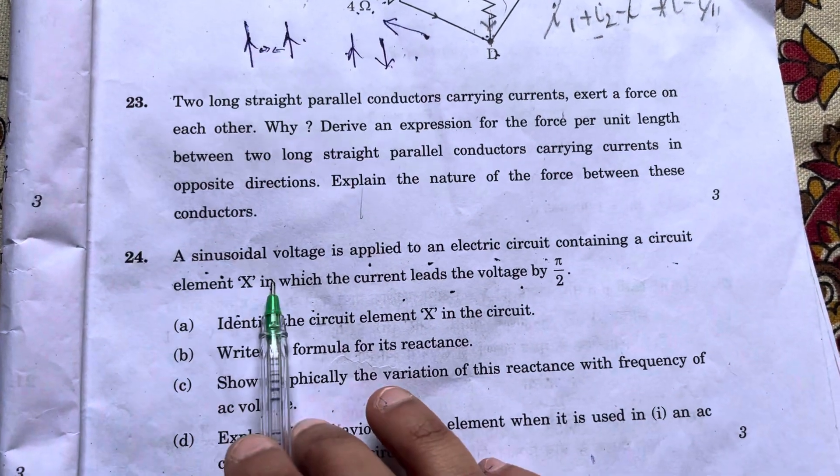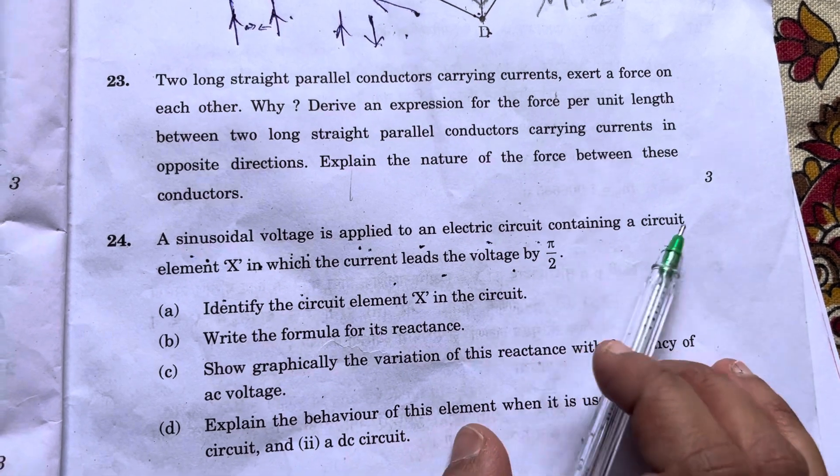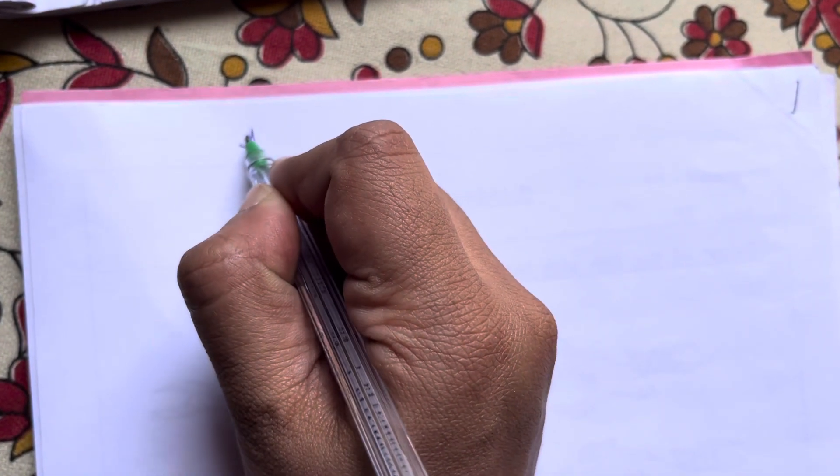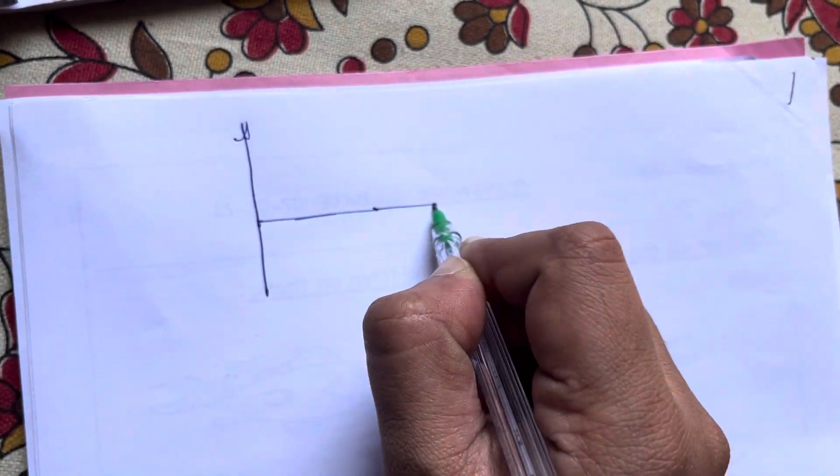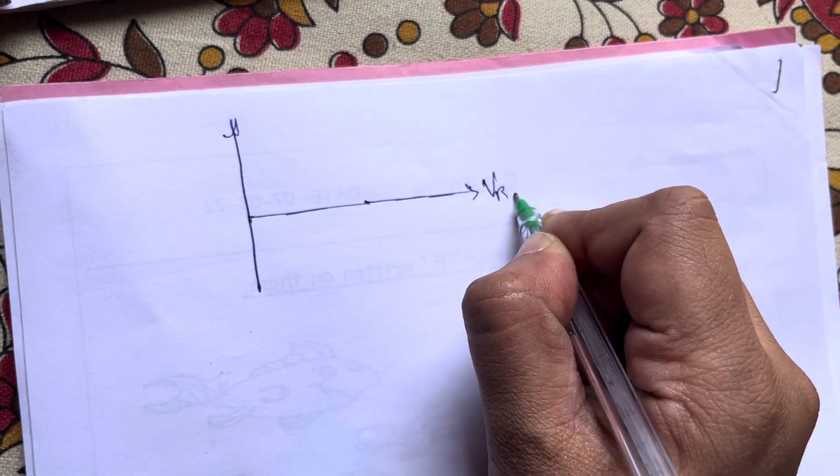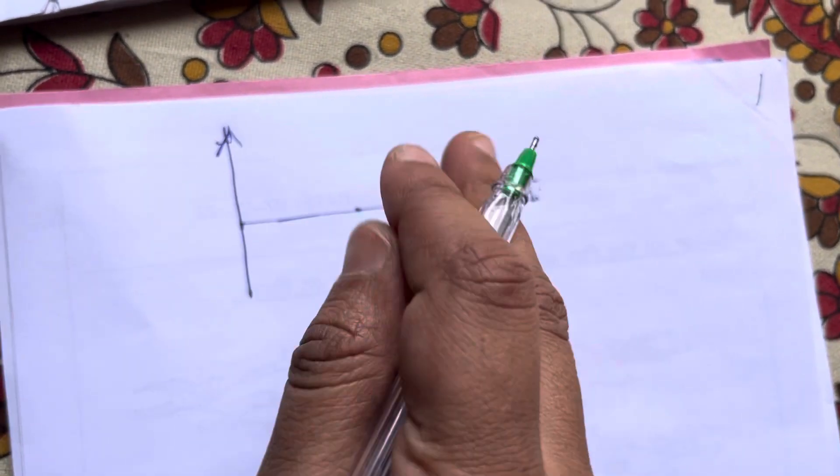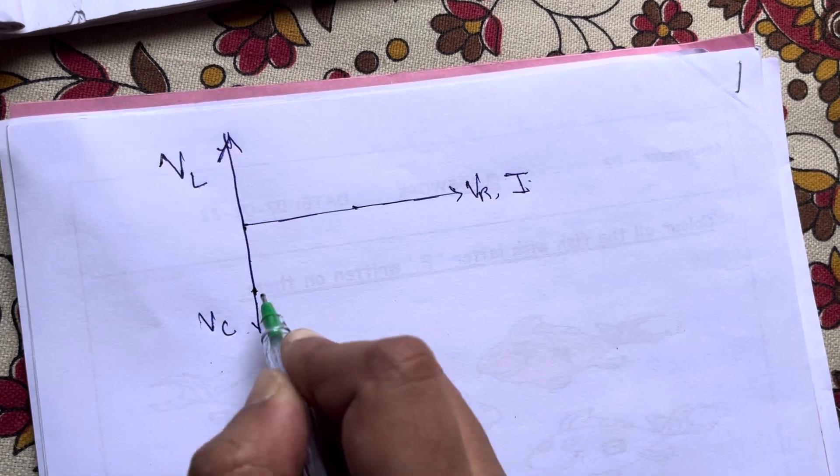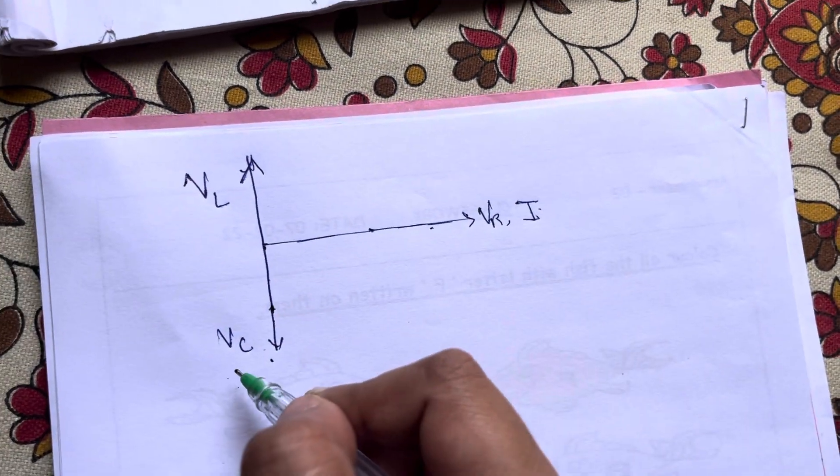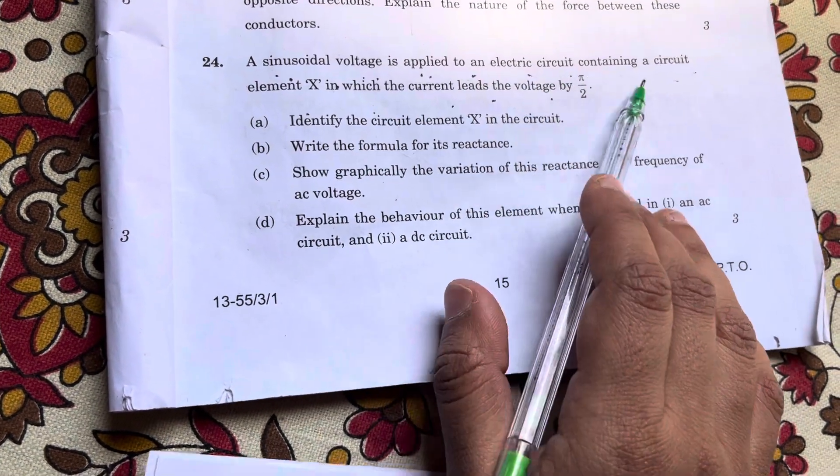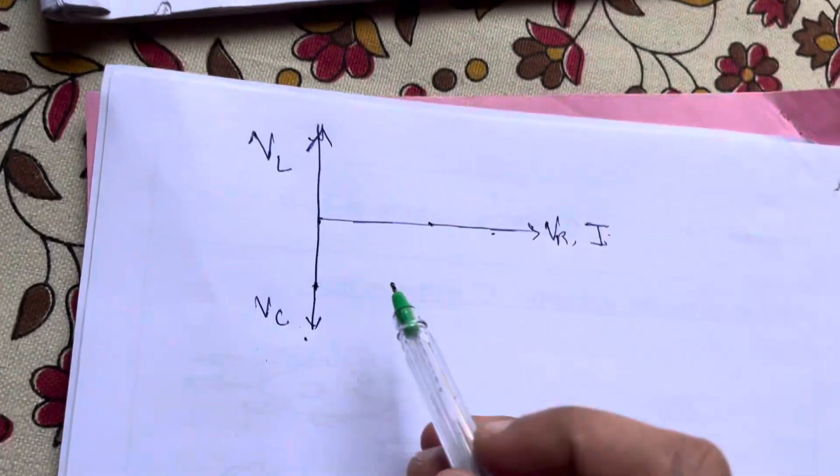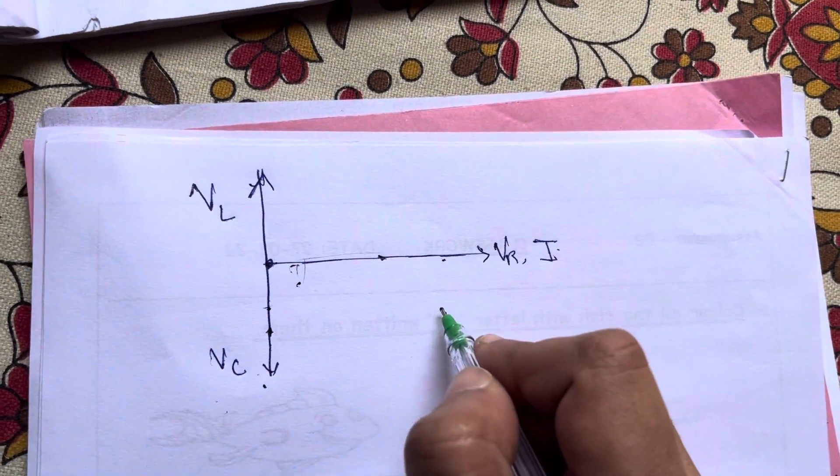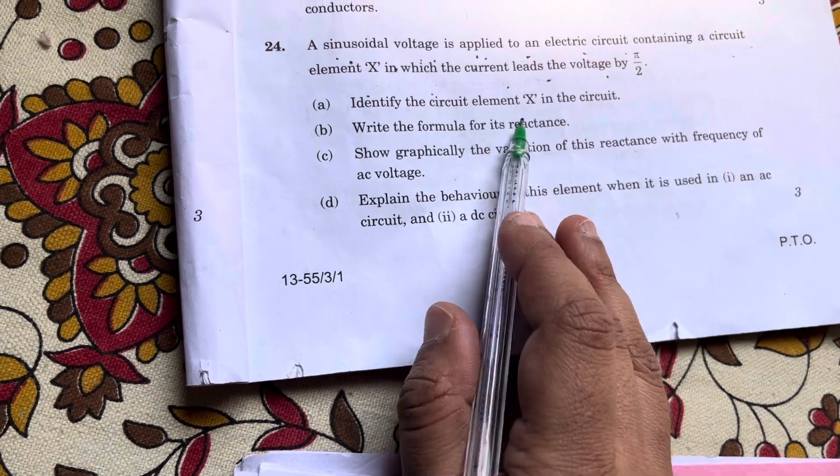Question number 24. A sinusoidal voltage is applied to an electric circuit containing a circuit element X in which current leads the voltage by 90 degrees. Let's see the phasor diagram. In a resistor, voltage and current are in phase. In an inductor, VL leads the current. When the capacitor is used, the current leads the voltage. So this is a sinusoidal applied circuit in which current leads the voltage by 90 degrees. Which circuit element is this? Of course, your first question is to identify the circuit element X in the circuit, which is the capacitor.